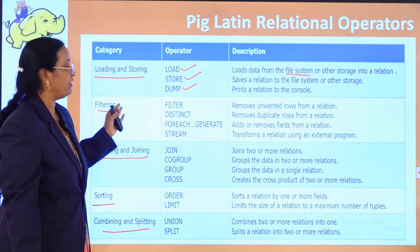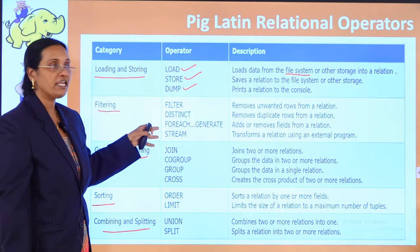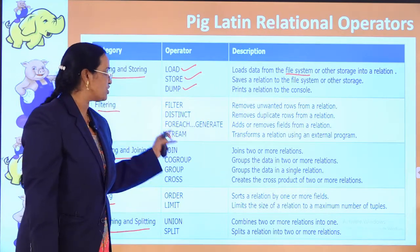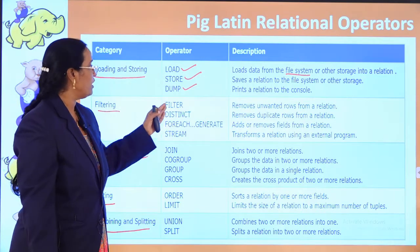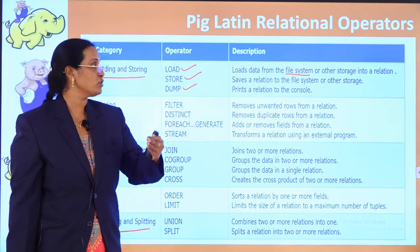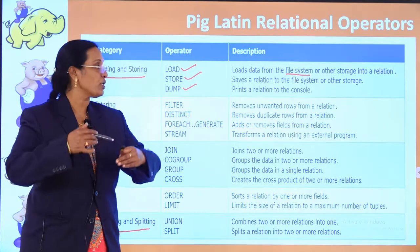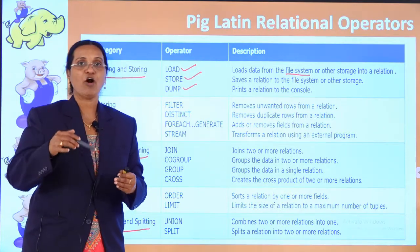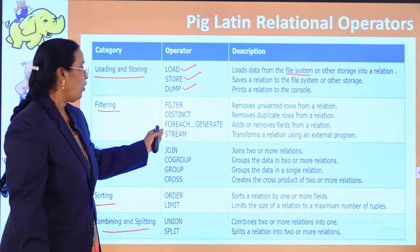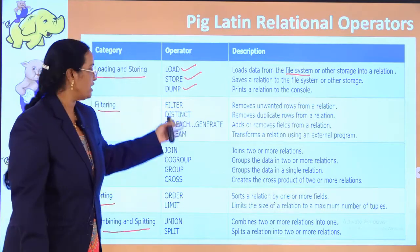The filtering category includes operators: FILTER, DISTINCT, FOREACH GENERATE, and STREAM. FILTER removes unwanted rows from a relation. DISTINCT removes duplicate rows and gives unique values. FOREACH GENERATE adds or removes fields from a relation. The STREAM operator transforms a relation using external programs.